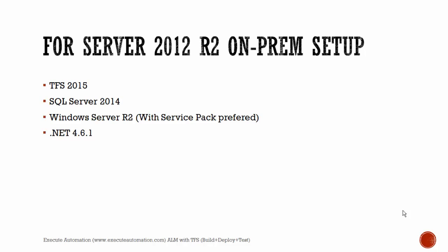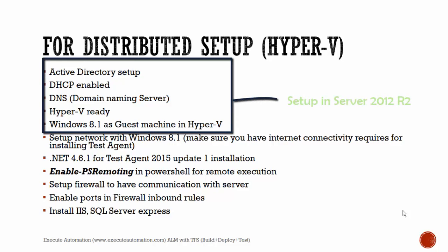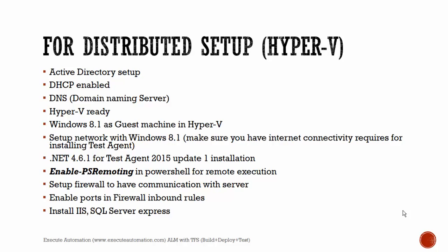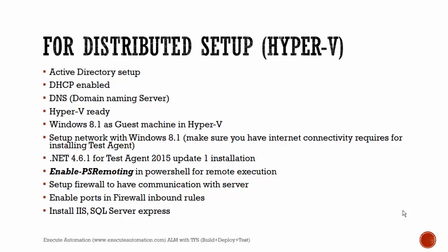If you're going to execute your server tests in a remote machine such as a Hyper-V machine, for the distributed or Hyper-V setup you should have the following on both server and client. On the server, you need an Active Directory setup so it can communicate with your distributed clients running in Hyper-V. You also need DHCP (Dynamic Host Client Protocol) enabled to assign IP addresses to remote machines, DNS (Domain Naming Server) service enabled on the Server 2012 machine, and Hyper-V ready.